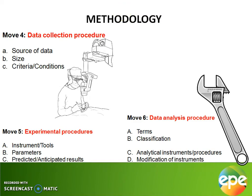In move five, the experimental procedure is considered — what are the experimental tools, the parameters, and the predicted or anticipated results that the scholarly written article has presented. In move six, you begin to unravel the data analysis procedure in terms of classification or the use of terminologies, while the use of analytical instruments or procedures and their modification can be closely aligned with move five.